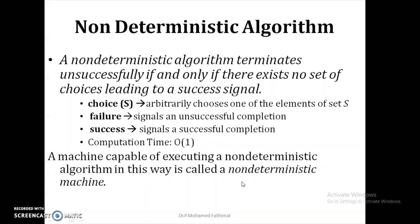A non-deterministic algorithm can be represented by three functions: Choice(S), Failure, and Success. Choice(S) applies a random function over the set S. If we get the expected output, the success signal is returned; if we do not get the expected output, the failure signal is the output. A machine capable of executing a non-deterministic algorithm in this way is called a non-deterministic machine.